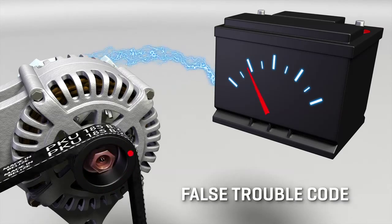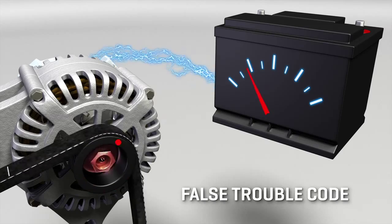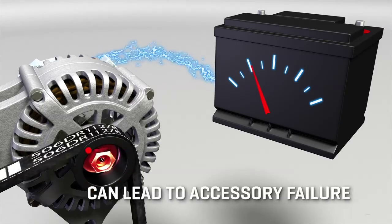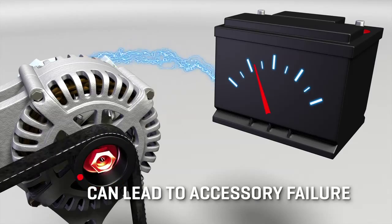The check engine light may even come on with an unrelated trouble code. Belt slip causes the accessories to be inefficient and shortens their service life due to the additional stress.